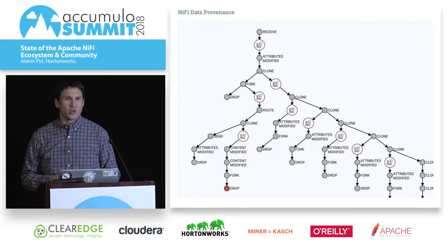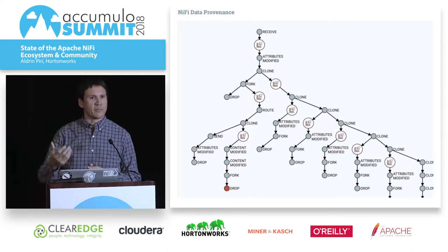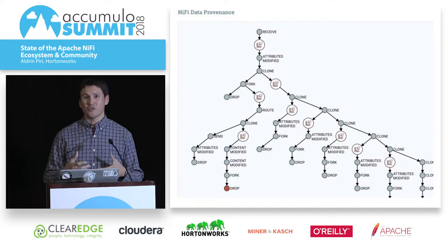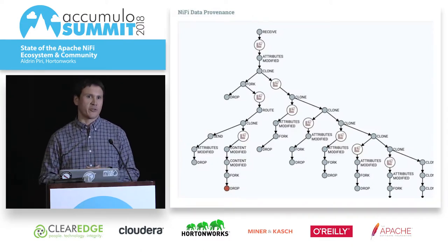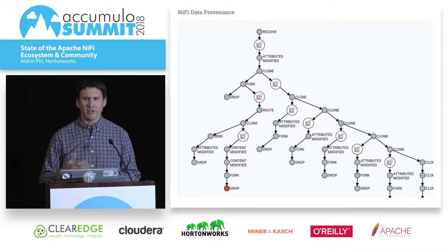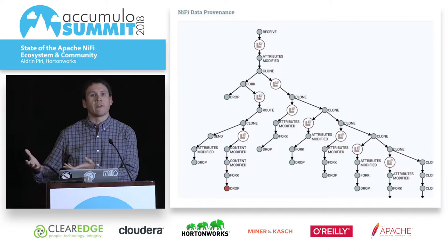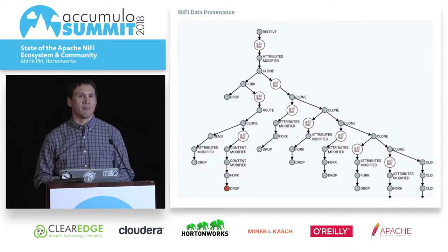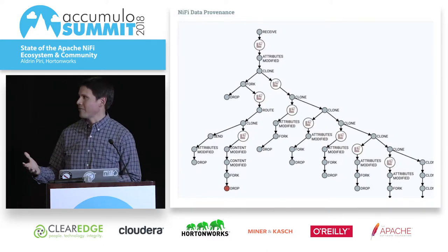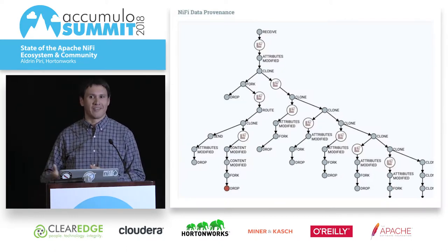One of the other interesting things about NiFi is data provenance or lineage - understanding how systems interact and change and affect the data. You'll see a series of events where a piece of data is received and then goes down various different paths. This provides a very powerful set of metadata that illustrates what touched the system, how long it took to get to a particular point in time, what systems changed it, and things like that. Depending on your configuration, it also allows you to replay data - if a team didn't receive it, I have the ability to say here it is again. It's a nice way of saying I did deliver it to you at this point in time, here's the event that happened, and here's the data again because you lost it.